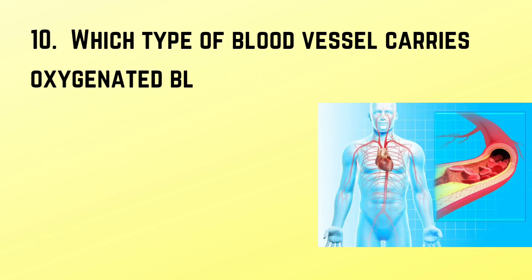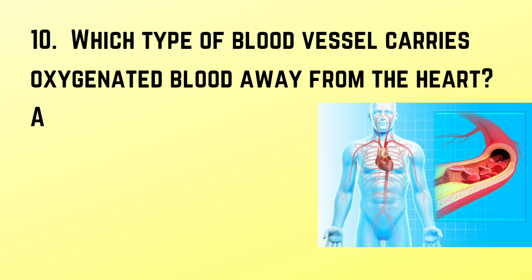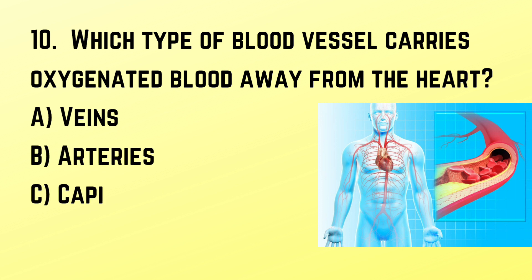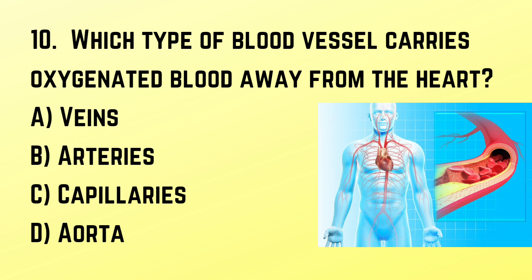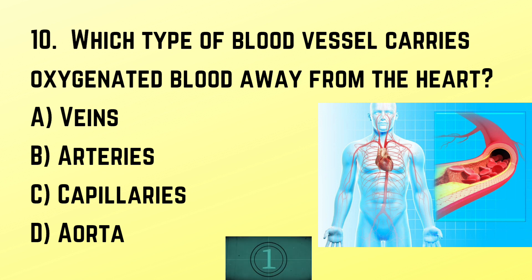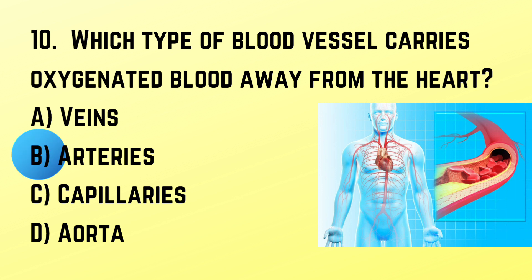Question number 10: Which type of blood vessel carries oxygenated blood away from the heart? Correct answer: B. Arteries.